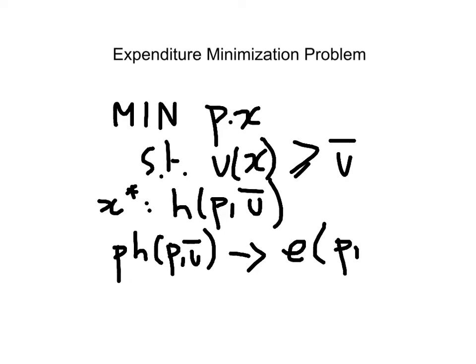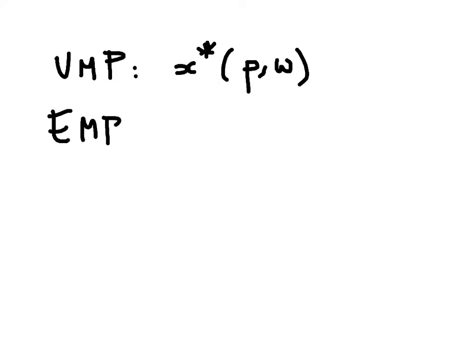So we have the utility maximization problem, where we pick a bundle x-star defined over prices and wealth. And we have an expenditure minimization problem where we pick a bundle x-star, which we're going to call the Hicksian, which is defined over prices and a certain utility level.